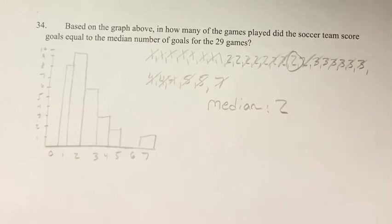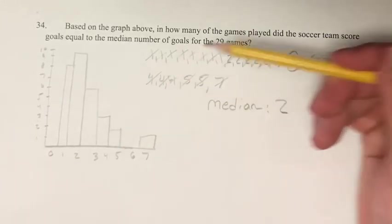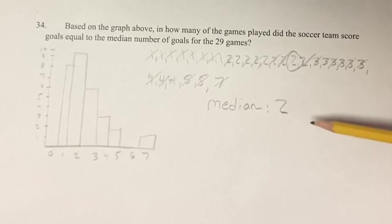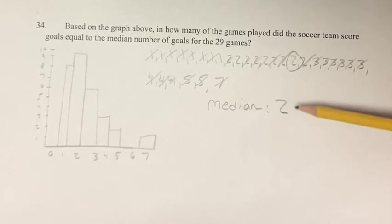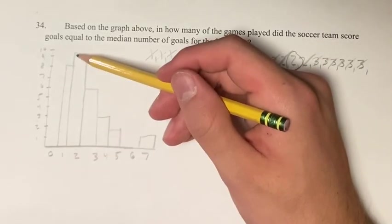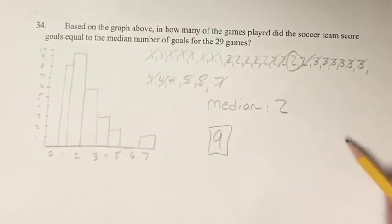And we're asked, in how many of the games played did they score the number of goals equal to the median number of goals? So in how many games did they score two goals? And we already found that earlier, is nine games. So nine is going to be your final answer.